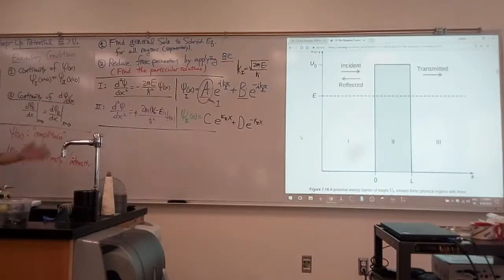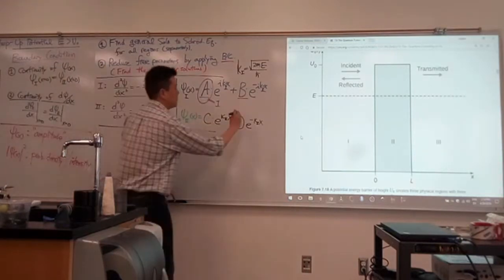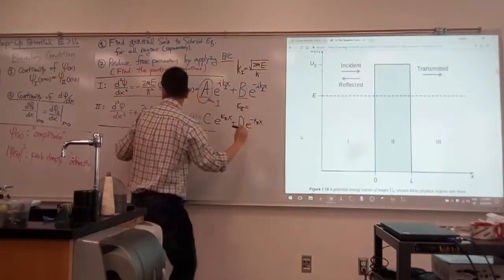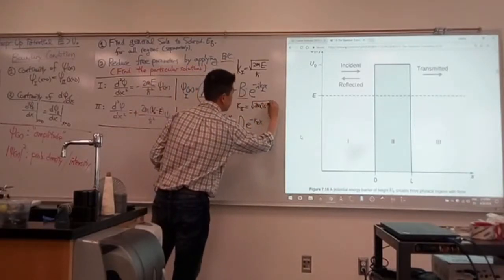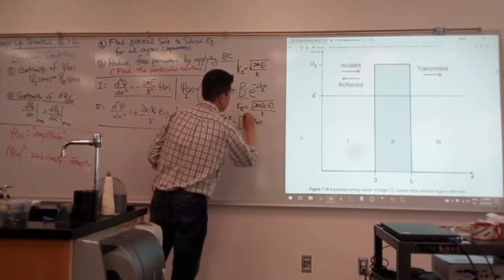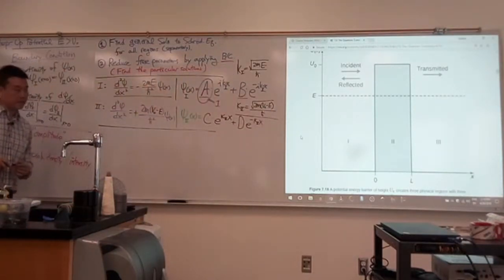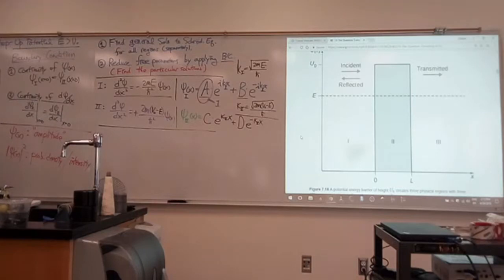And, I guess I should write down my definition of kappa. So kappa two is defined as square root of 2m v naught minus e over h bar. And just to make sure we didn't make any mistake, is my kappa two real and positive? As in, the thing that I'm putting under the square root, it's positive. Right? Good. All right. So, I have two general solutions.